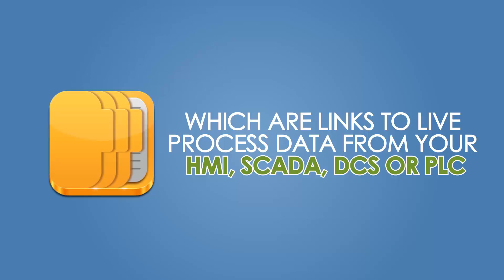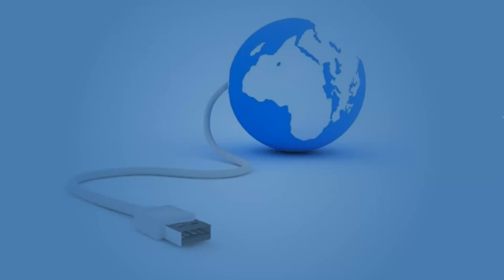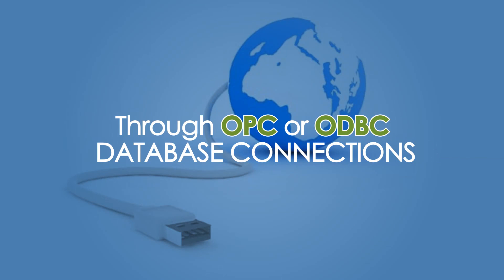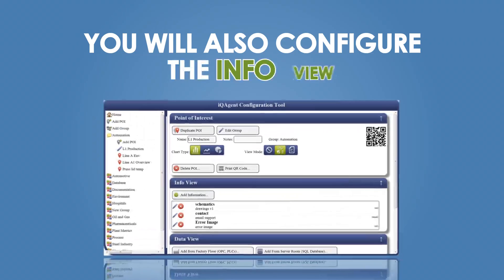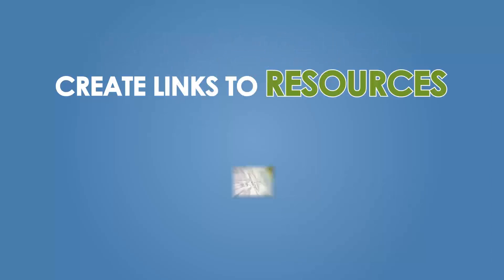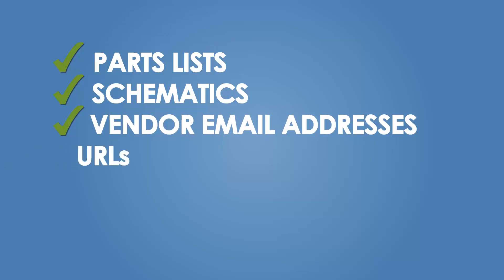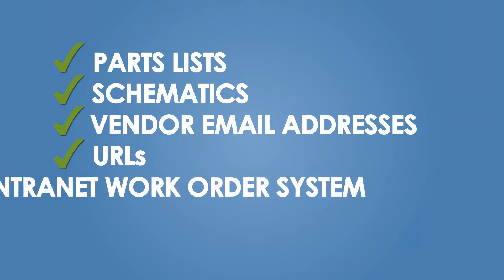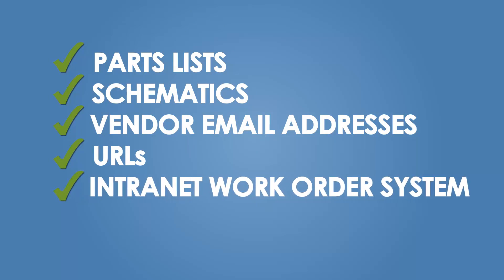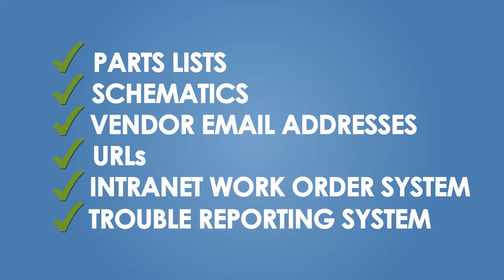For each point of interest, you configure data views, which are links to live process data from your HMI, SCADA, DCS, or PLC, through OPC or ODBC database connections. You will also configure the info view, allowing you to create links to resources like parts lists or schematics, vendor email addresses, and URLs for your document server, intranet work order system, or trouble reporting system.